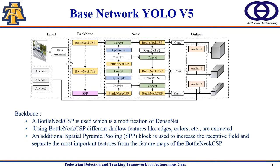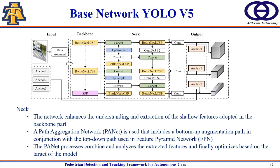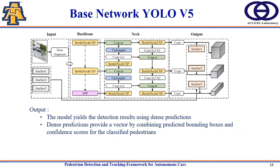The neck part of the network enhances the understanding and extraction of shallow features from the backbone by adding a bottom-up augmentation path alongside the top-down path used in Feature Pyramid Network. A Path Aggregation Network (PANet) is used to process, combine, and analyze the extracted features. Finally, the output section yields detection results using dense prediction, which provides a vector combining predicted bounding boxes and confidence scores for classified pedestrians.